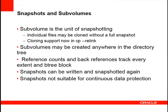Snapshots and subvolumes are one of the main features that make BtrFS different from other Linux file systems. A subvolume is basically a directory that can be snapshotted. It's not really different from a directory at all — the only thing that makes it special is there's enough extra metadata attached to it that we can take a snapshot of it. Making a subvolume is no less efficient than making a directory, but you can snapshot it.